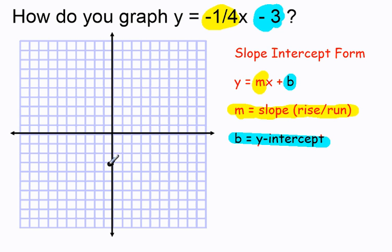Now to find additional points, I can use my slope. My slope in this case is negative one-fourth.